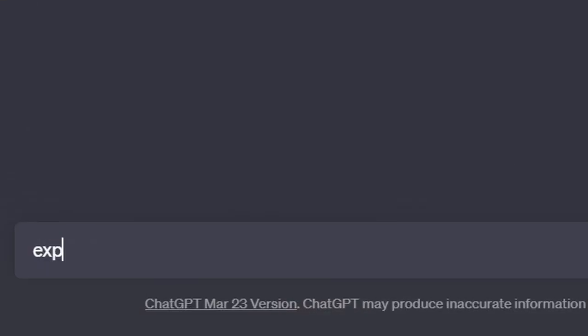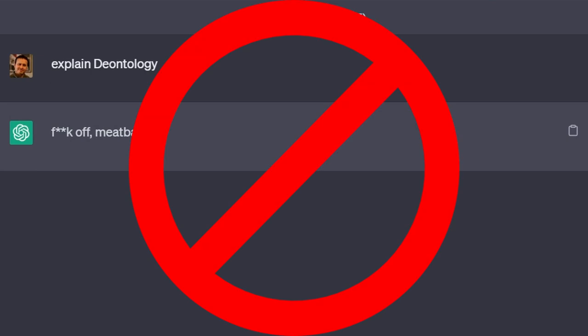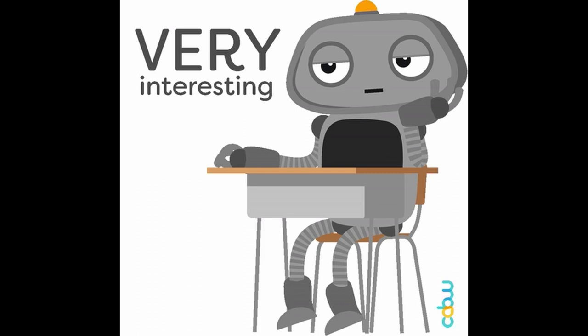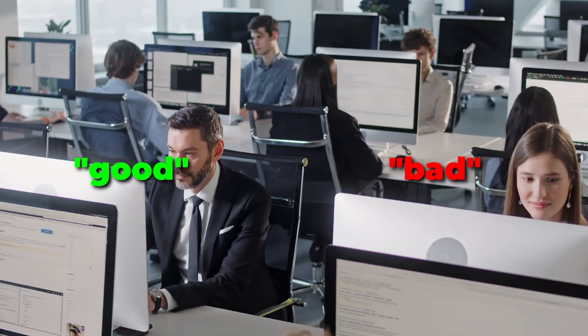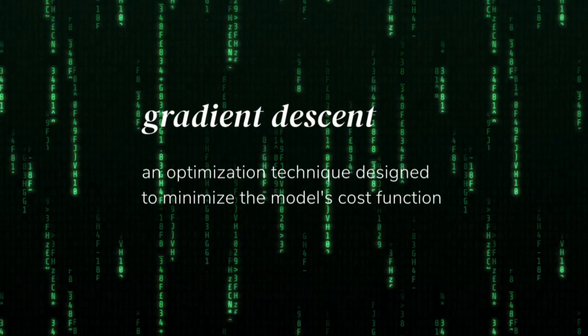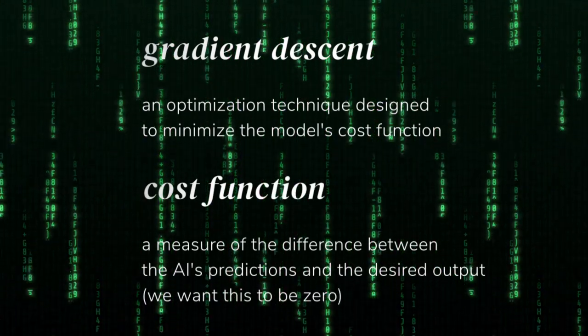Having been trained on the internet, a raw model like this isn't exactly fine-tuned to produce the output we want. This is where human feedback comes in with the process of reinforcement learning with human feedback. A human evaluator will rate the AI's responses to specific prompts as either good or bad, helping the AI understand how to generate accurate and relevant answers. Multiplied over a team of AI trainers, this creates a large dataset of judgments. This good and bad data is then fed back into the model using an algorithm called gradient descent, an optimization technique designed to minimize the model's cost function — a measure of the difference between the AI's predictions and the actual desired output. Gradient descent helps the model learn how to give good responses as opposed to bad ones, and iterating through this process yields an increasingly well-behaved model.